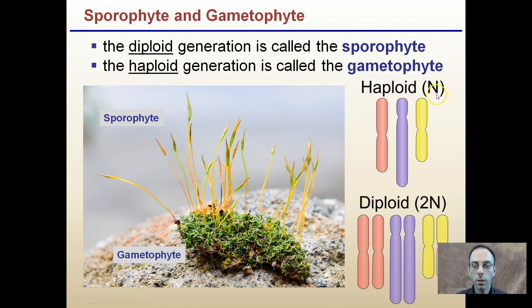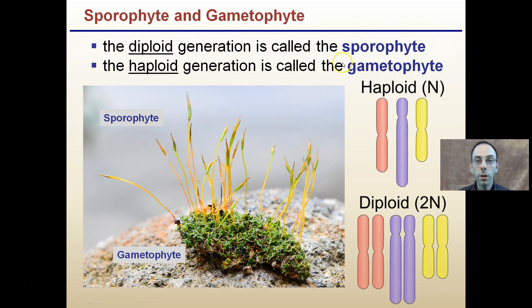The diploid generation is called the sporophyte — 2n — shown up here in this moss example. The haploid generation is the gametophyte, shown down here. So we see the gametophyte being haploid, and the sporophyte here being diploid.